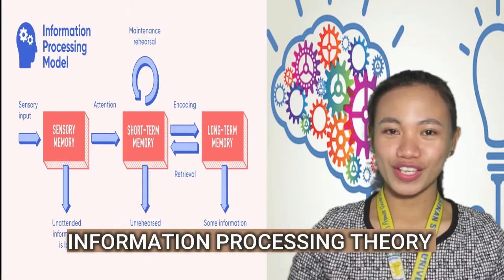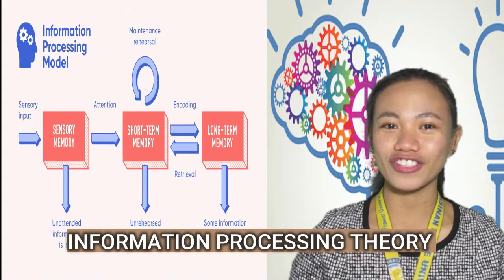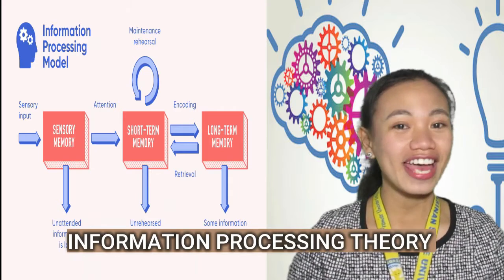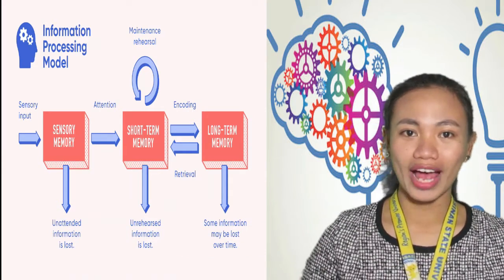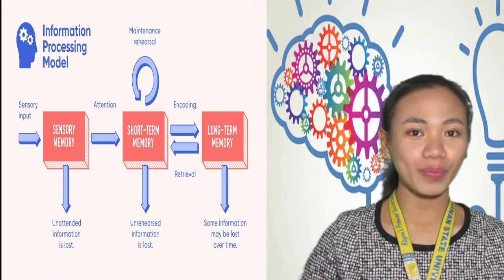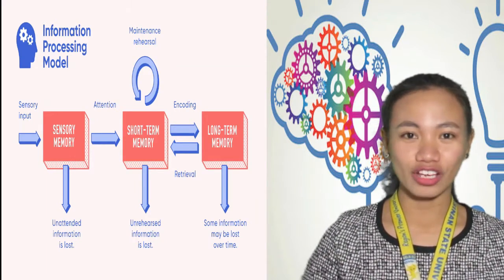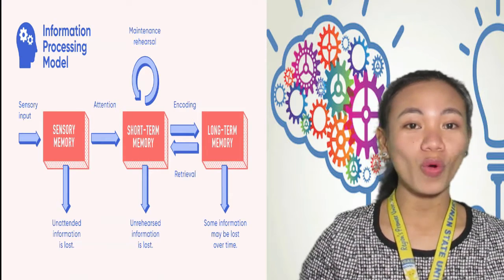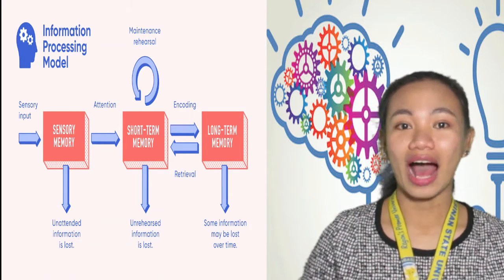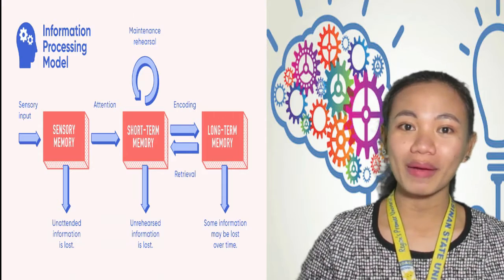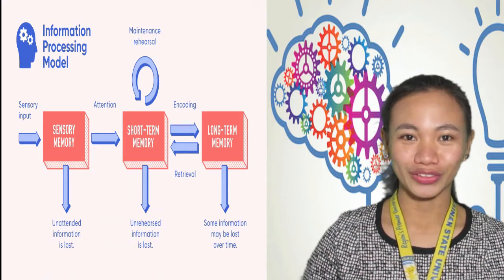Information Processing Theory is a cognitive theory that focuses on how information is encoded into our memory. The theory describes how our brains filter information from what we're paying attention to in the present moment to what gets stored in our short-term or working memory and ultimately into our long-term memory.